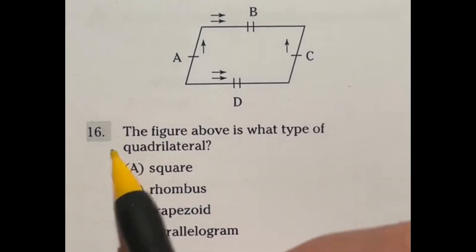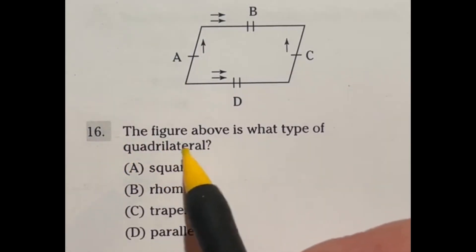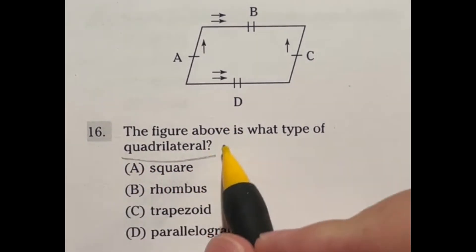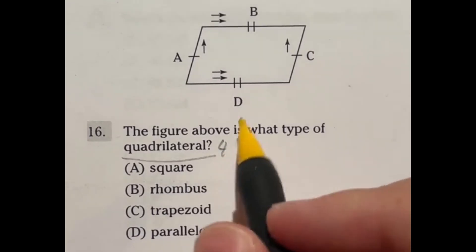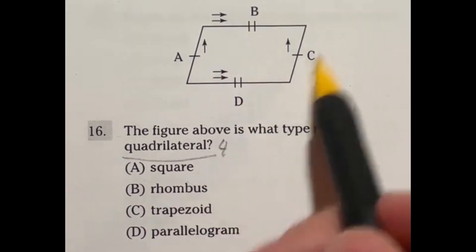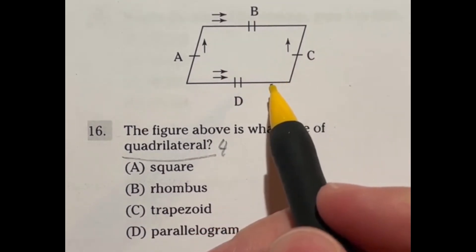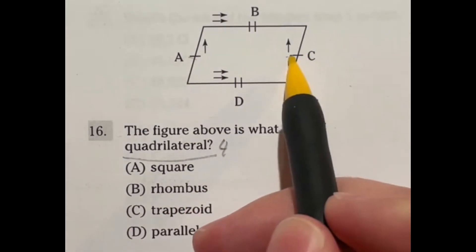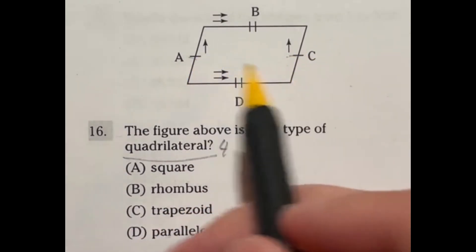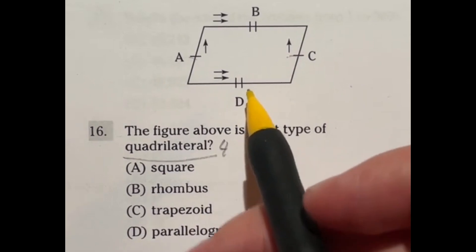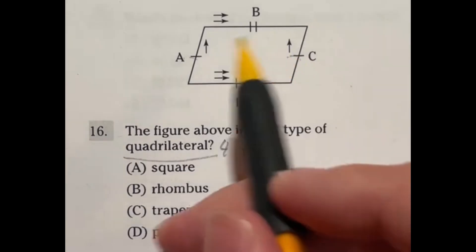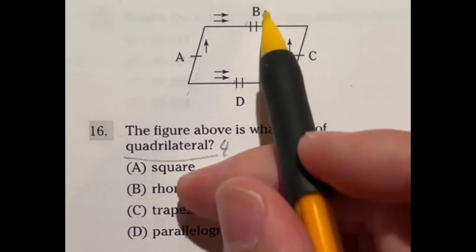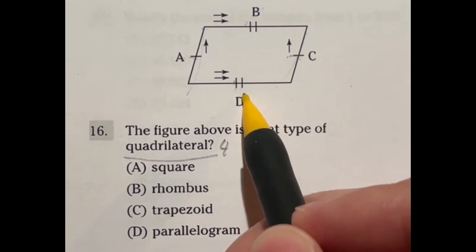For question 16 on the ASVAB, it says the figure above is what type of quadrilateral. Quadrilateral alone tells us that it has four sides. There's a lot of symbols here. Let's talk about what those mean. First off, if you have a dash through two different sides on a figure, that means that they are the same length. So in this case, A and C are the same length. And because this one has two dashes, that means B and D are the same length.